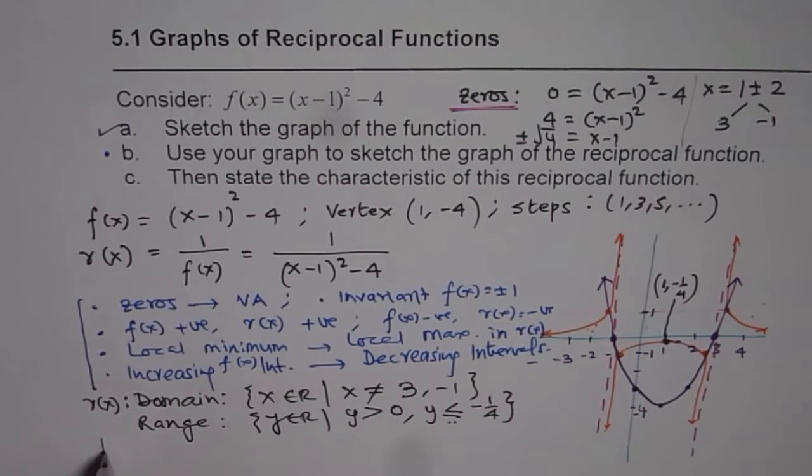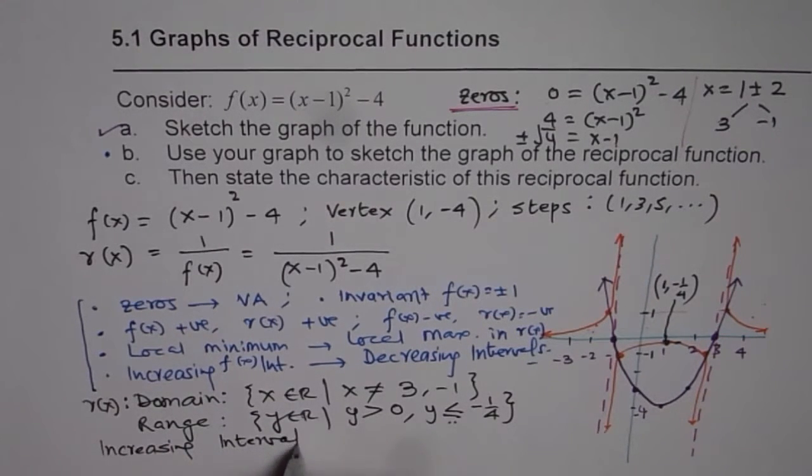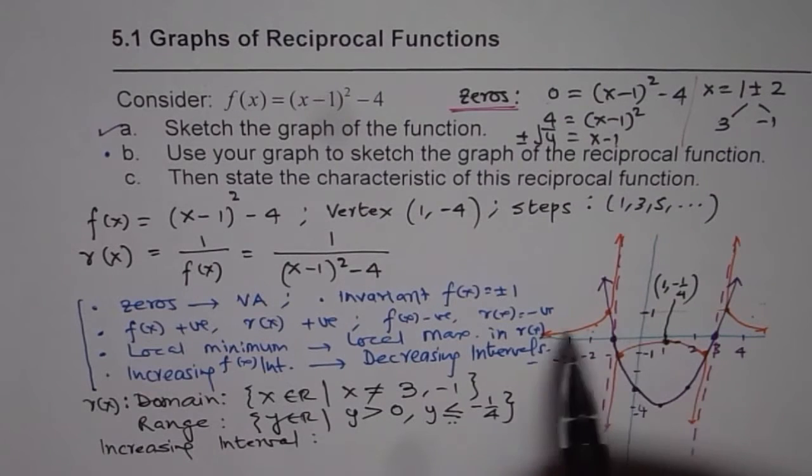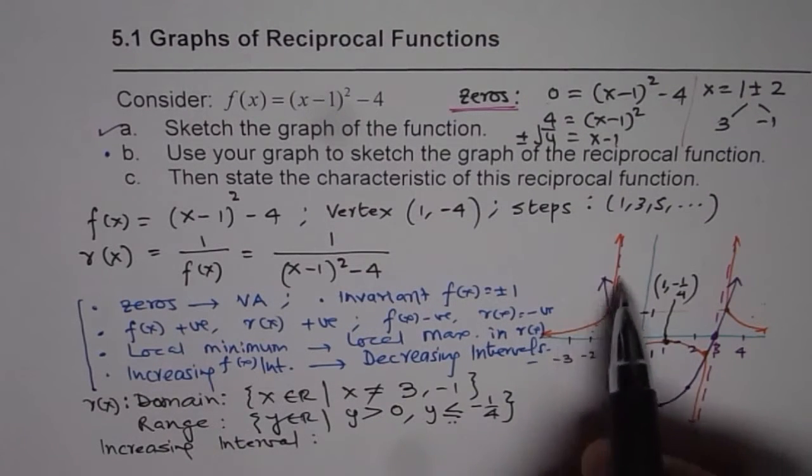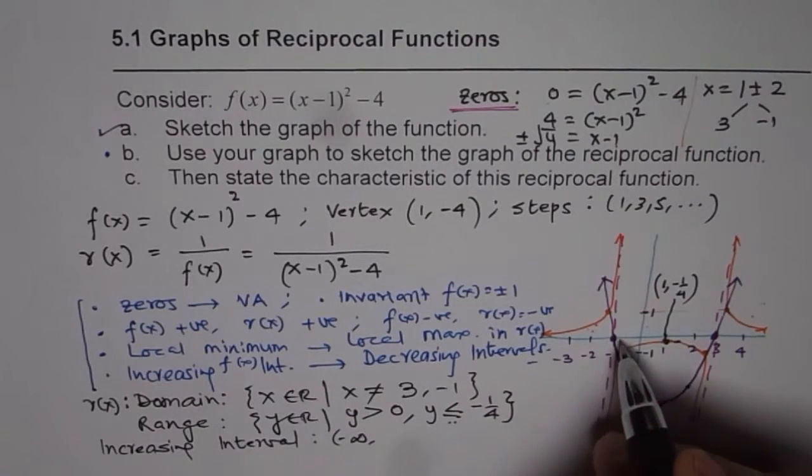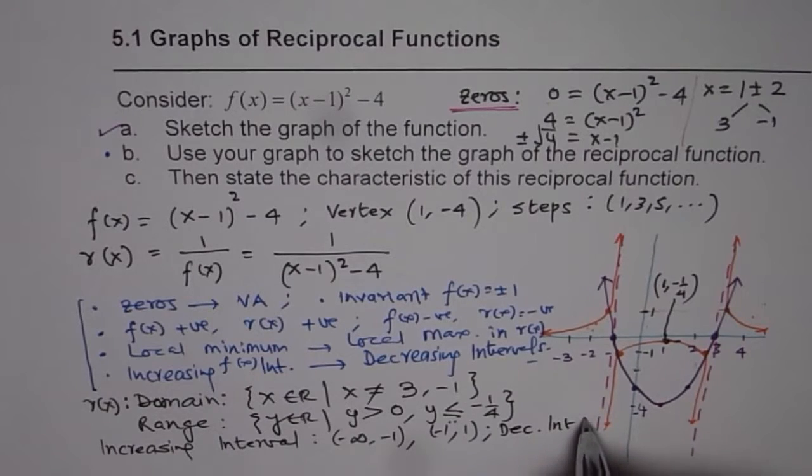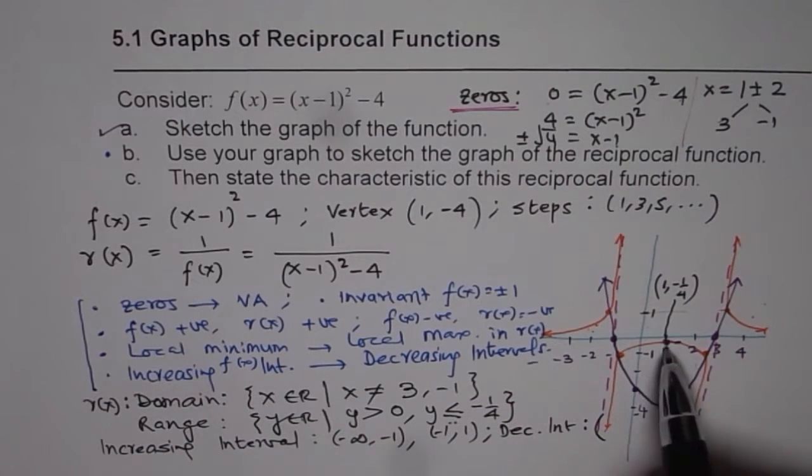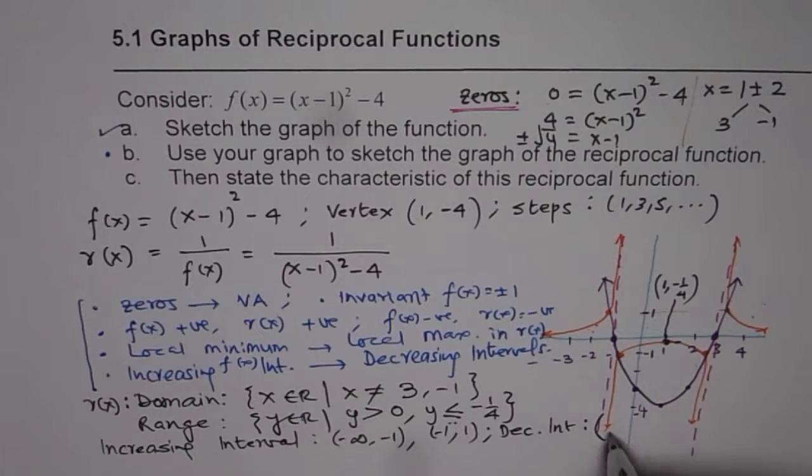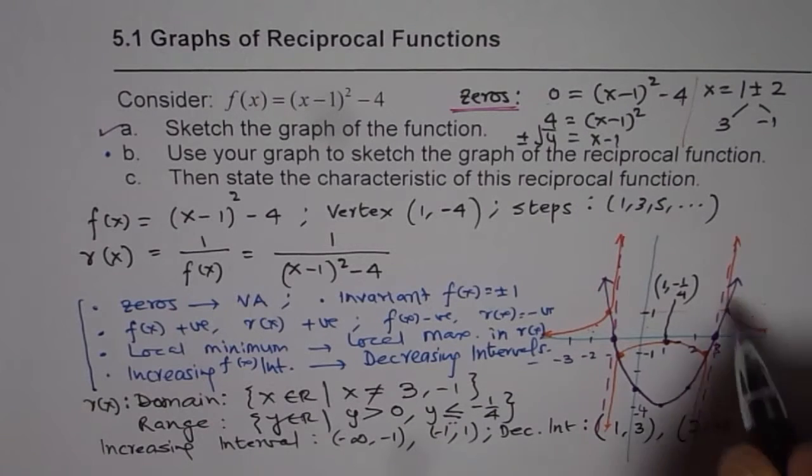For increasing intervals: the reciprocal function is increasing from -∞ to -1, and from -1 to 1. For decreasing intervals: it decreases from 1 to 3, and from 3 to ∞. Never include the asymptotes in your intervals.